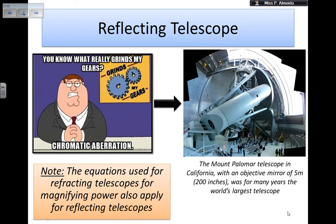If you remember the last video, we spoke about chromatic aberration, which was a problem of the refracting telescopes. So reflecting telescopes use mirrors instead. The equations I told you about — magnification, where to get the focal point, and all those things — they work just the same.